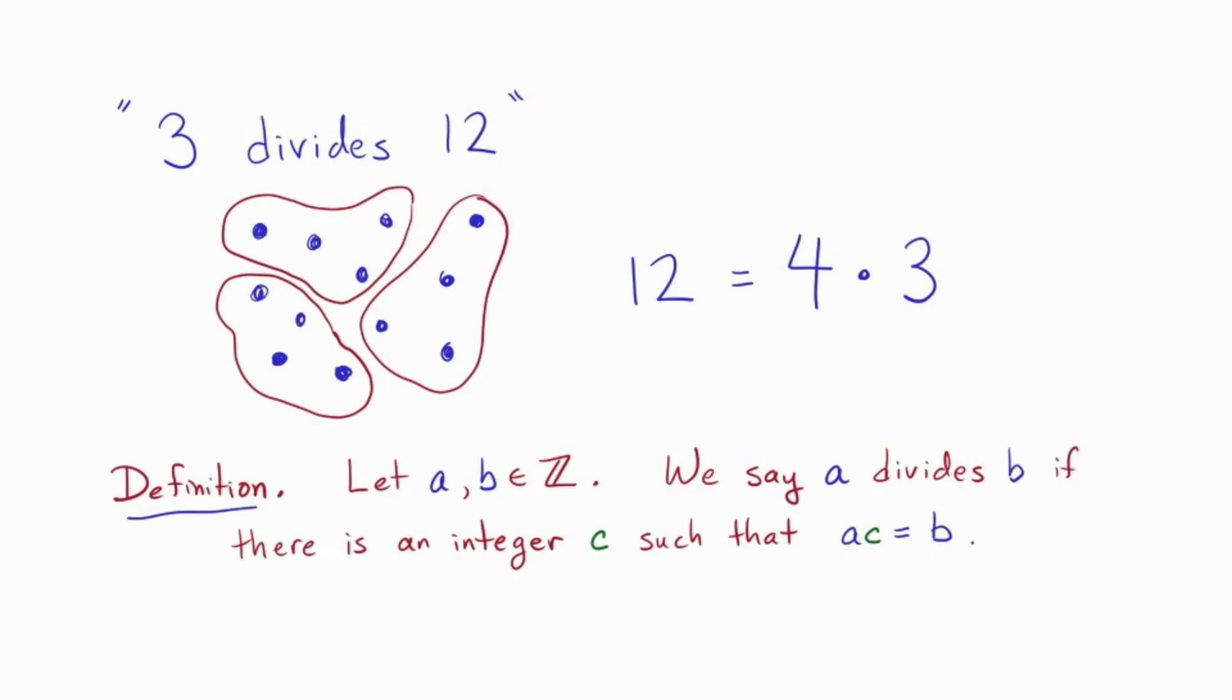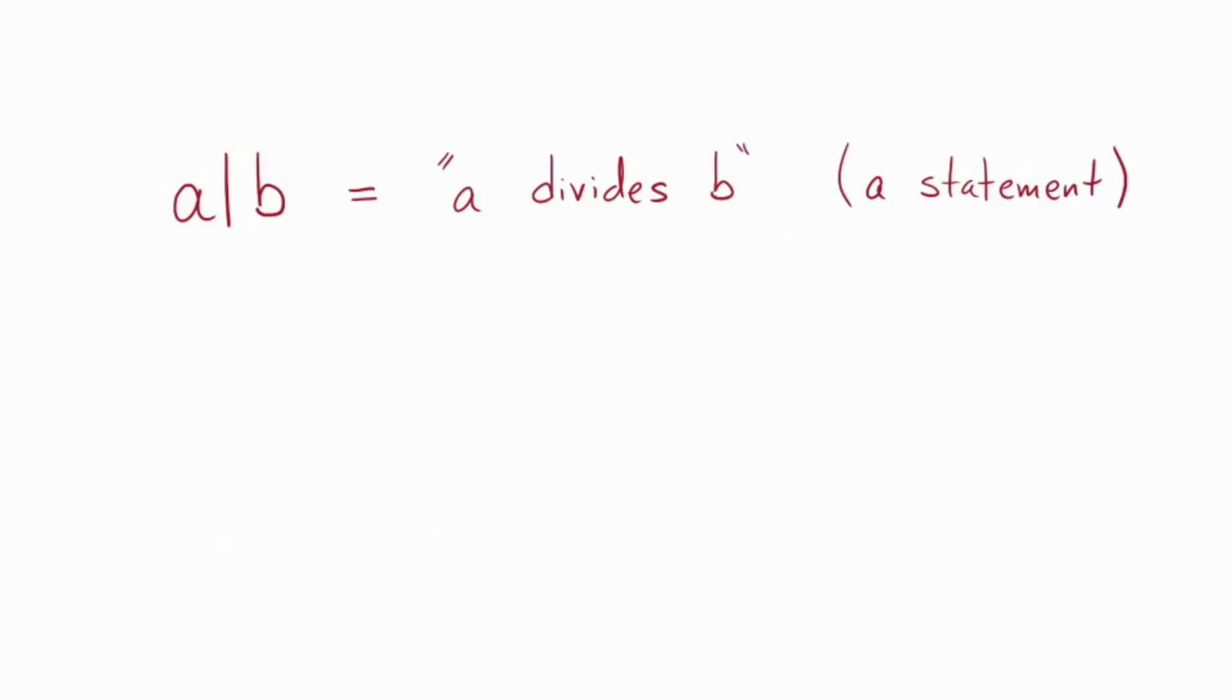A couple of quick notes. First, we have a nice notation for this. We write a divides b with a vertical line. Now, this notation is a whole grammatical sentence. It says a divides b, which is a statement about truth in the universe. Don't confuse it with the fraction notation, which actually denotes a number. They're totally different things.